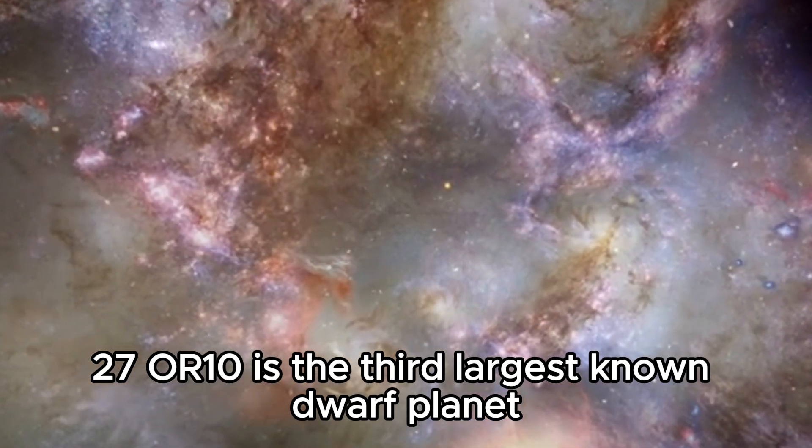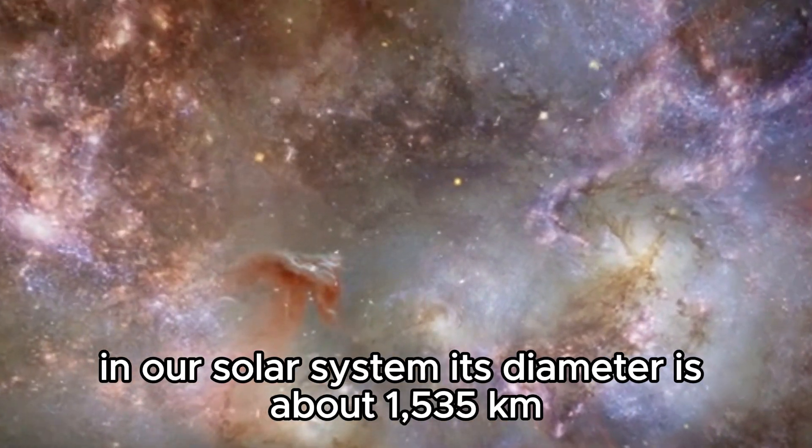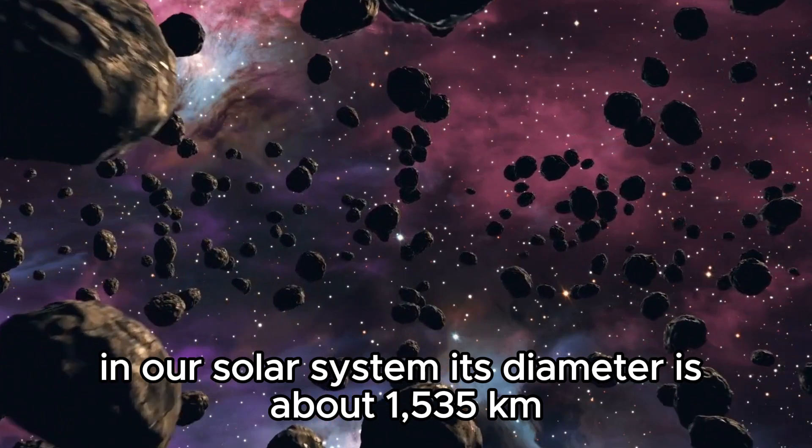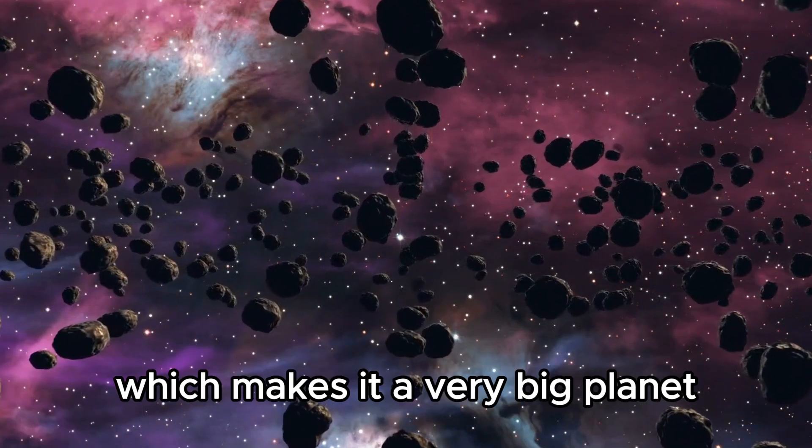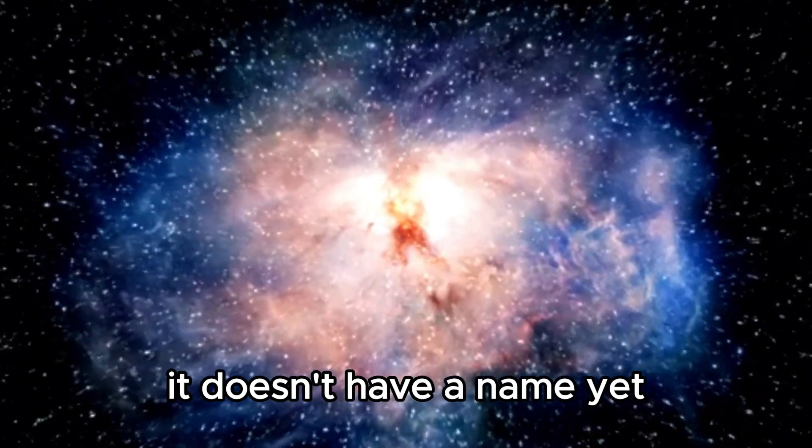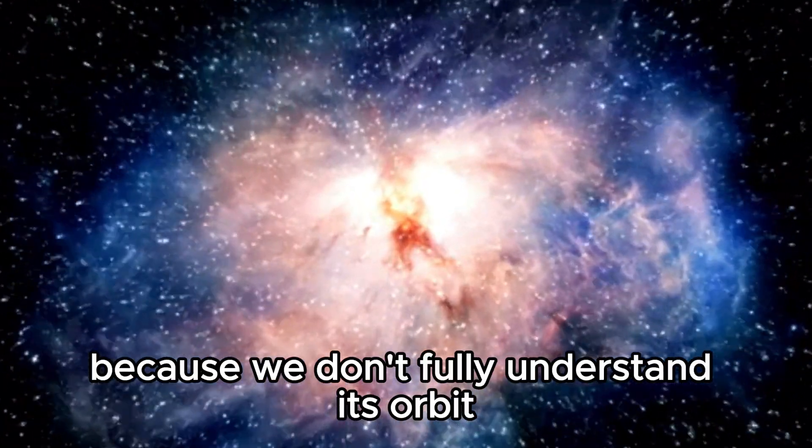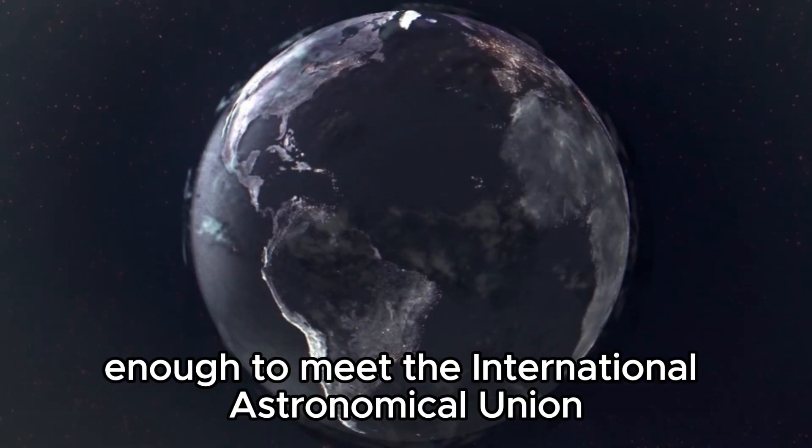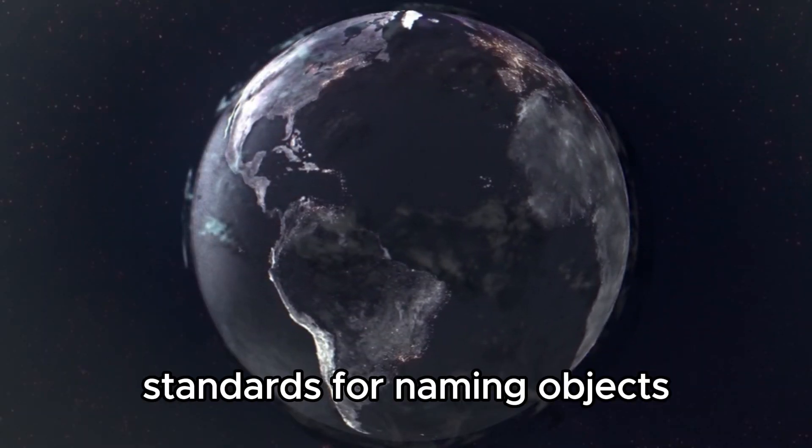2007 OR10 is the third largest known dwarf planet in our solar system. Its diameter is about 1,535 kilometers, which makes it a very big planet. Even though it is very big, it doesn't have a name yet because we don't fully understand its orbit and haven't been able to figure it out enough to meet the International Astronomical Union standards for naming objects.